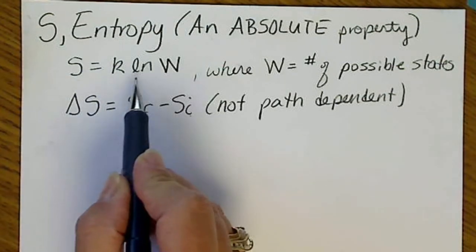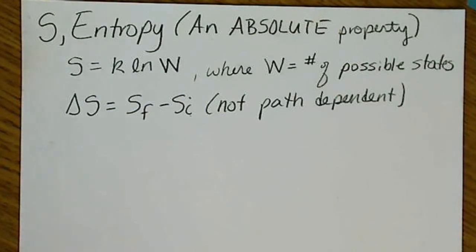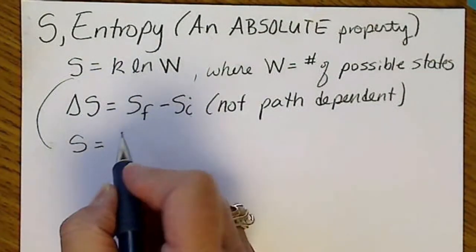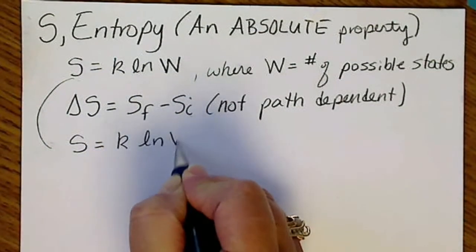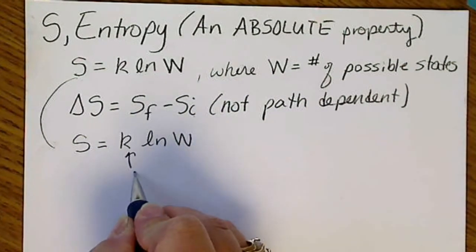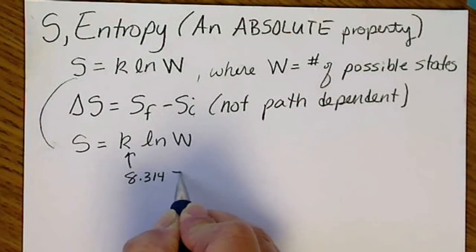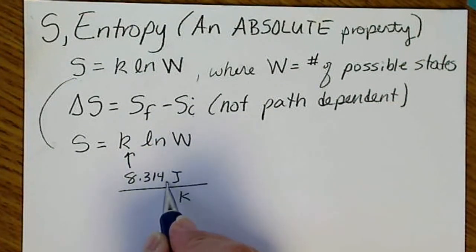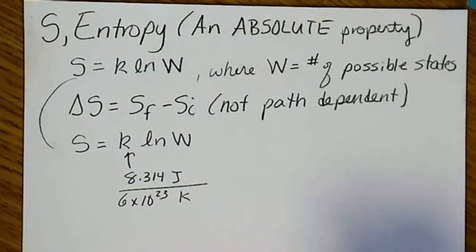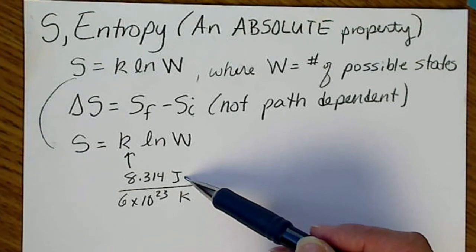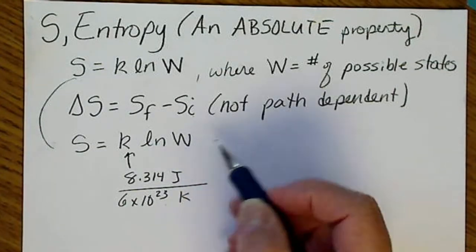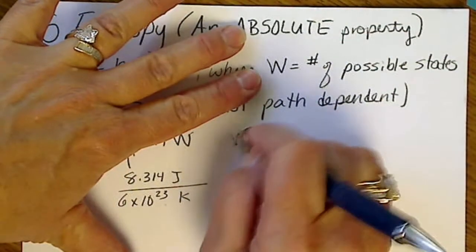The definition S equals k times the natural log of W is the statistical definition, and we are not going to use this definition but we'll take a quick look at it. Here k is Boltzmann's constant, which is the universal gas constant in joules per mole per degree Kelvin divided by Avogadro's number — 6×10²³ — essentially converting the universal gas constant from per mole into per item.